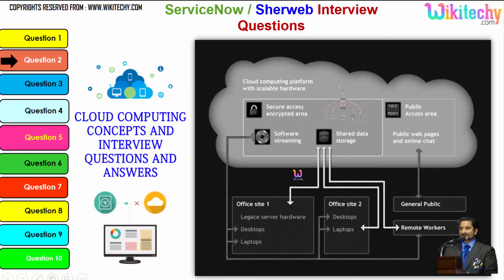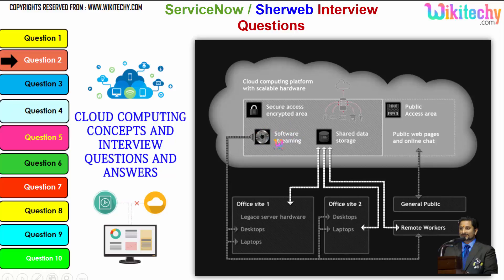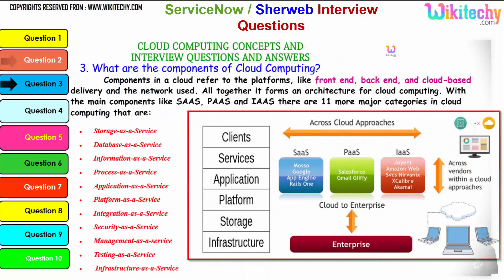Cloud computing provides a public access area with public web pages for end users, along with secure data access, shared data storage, and software streaming. Companies can use it as a private kind of environment, and the public can use it to access web pages or websites. The components of cloud computing refer to platforms like front-end, back-end, cloud-based delivery, and the network — all together forming the cloud computing architecture.